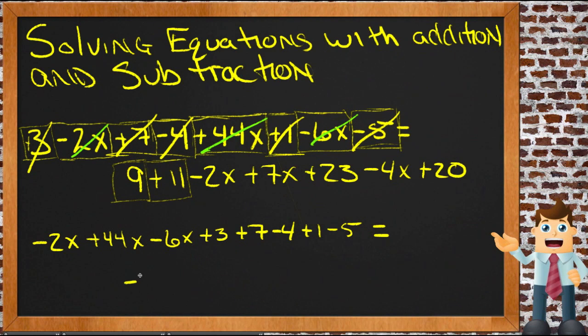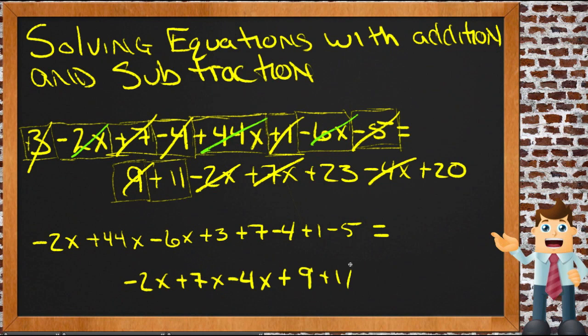So we have our negative 2x plus 7x plus, oops, sorry, plus negative 4x. So we'll just write that as minus 4x. So we've done this one, we've done this one, we've done this one, and that's it for the x's. So then we need to do our constants, so we have plus 9, plus 11, plus 23, plus 20. So the 11, 23, 20, okay, so we're good.